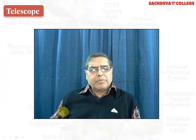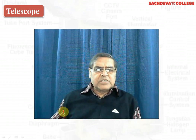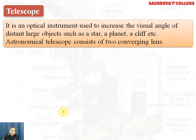Now after the microscope, we come towards the telescope, where we have to magnify objects in space. A telescope is also an optical instrument having two lenses: the objective lens and the eyepiece.